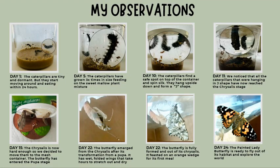My observations from the butterfly's life cycle. Day 1: the caterpillars are tiny and dormant. Day 5: the caterpillars have grown three times and they are feeding on the mallow plant. Day 10: the caterpillars find a safe spot on top and they form a J shape.